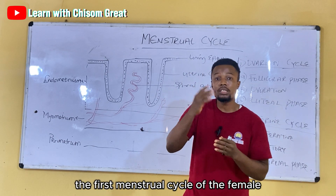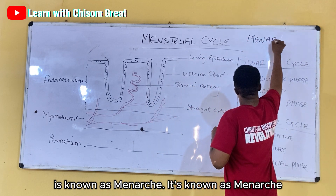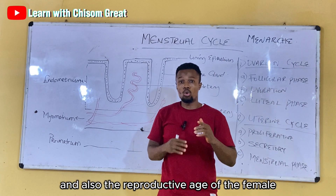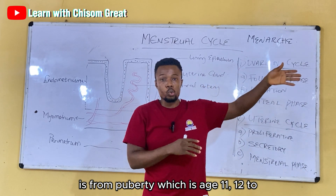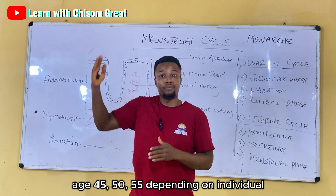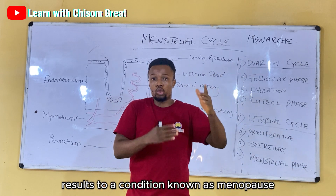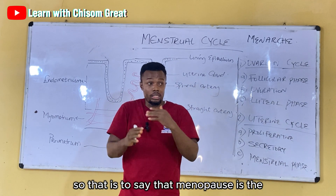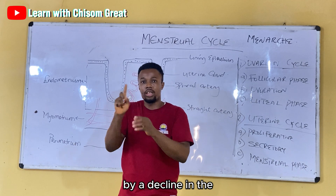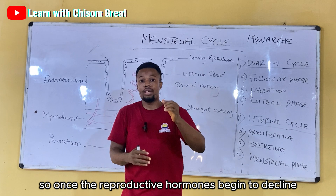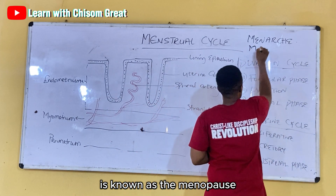The onset or the first menstrual cycle of the female is known as menarche. The reproductive age of the female is from puberty, which is around age 11 to 12, up to age 45 to 55, depending on the individual. The end of the reproductive age results in a condition known as menopause, which is the stage in the female caused by a decline in the reproductive hormones.